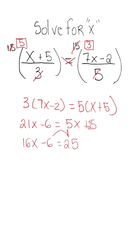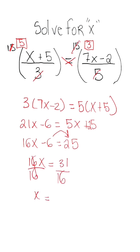Going to add 6 on both sides, so we have 16x is equal to 31. And then after we divide, x is going to be equal to 31 over 16.